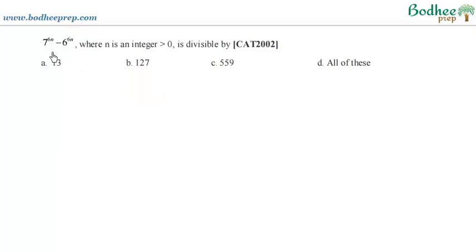Now the question is that 7 to the power 6n minus 6 to the power 6n, where n is an integer, in fact a positive integer because it is greater than 0. We have to find from which of the following it is divisible by.